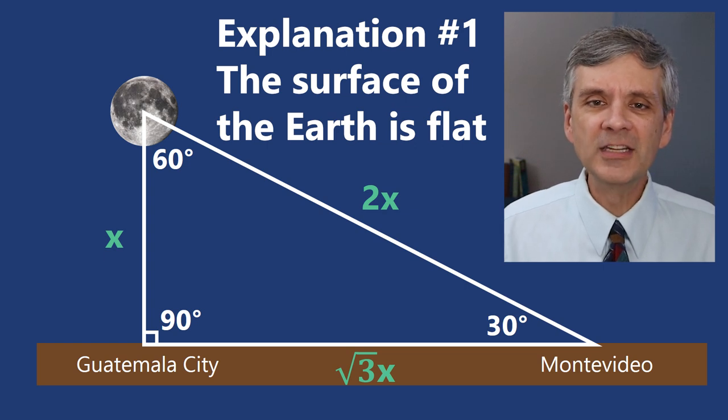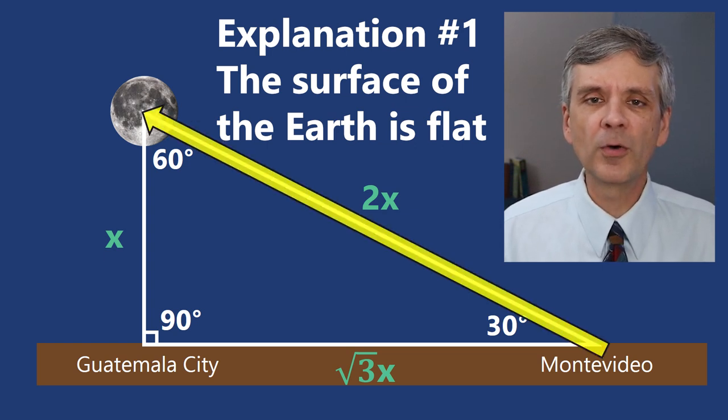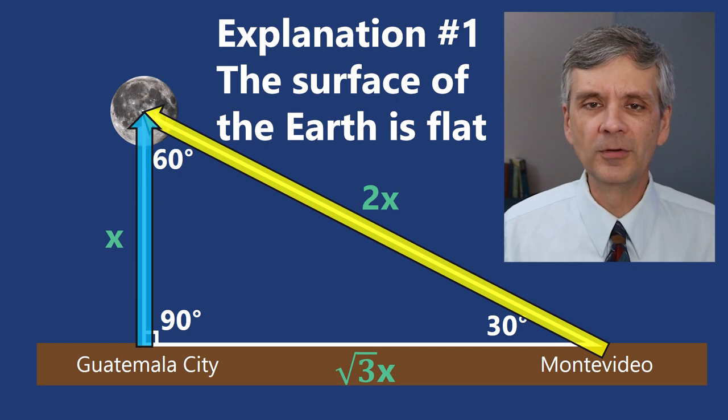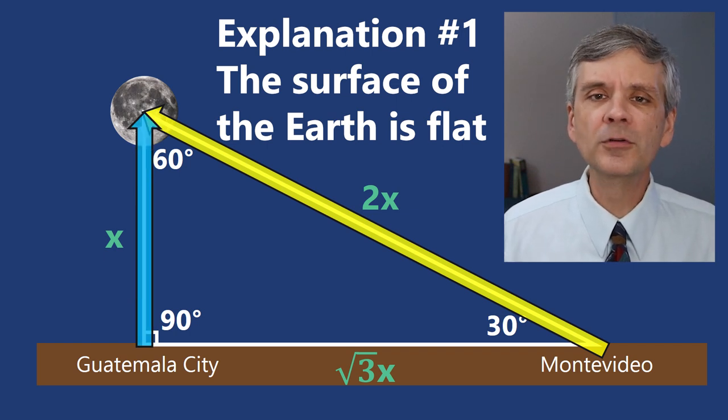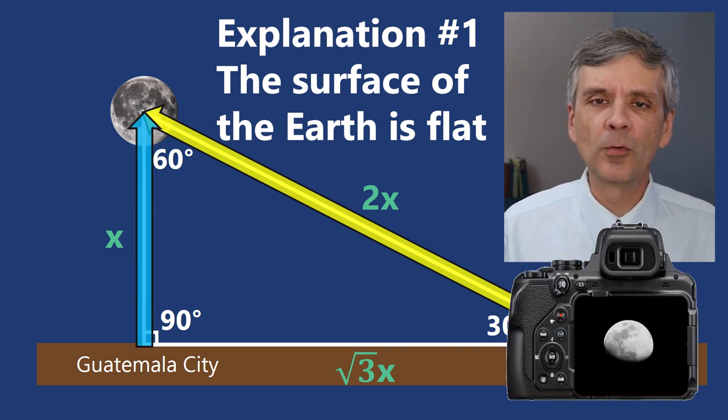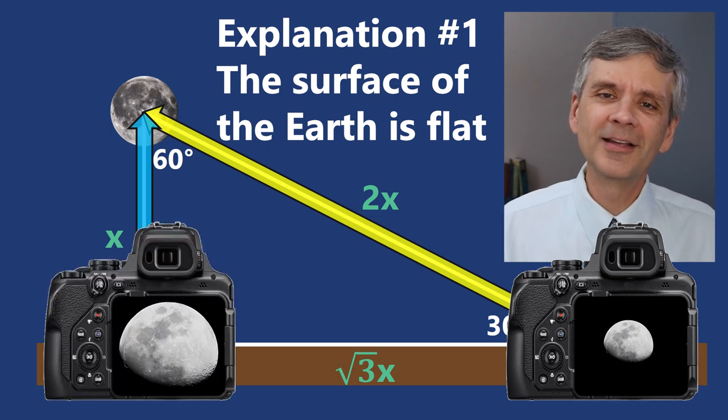So at that moment in time, the distance from Uruguay to the moon would be twice the distance from Guatemala to the moon. Therefore, we should expect the moon to appear about half as wide from Uruguay as it does from Guatemala. But that doesn't happen.